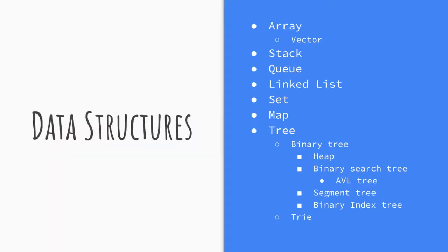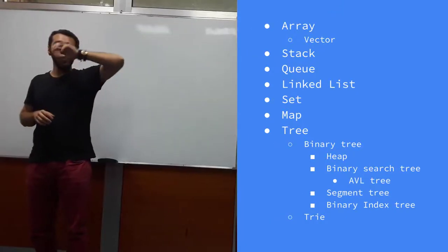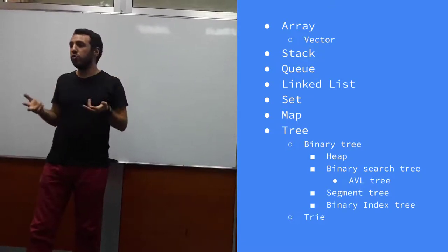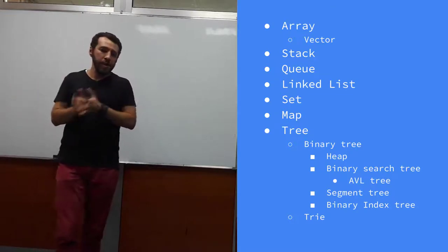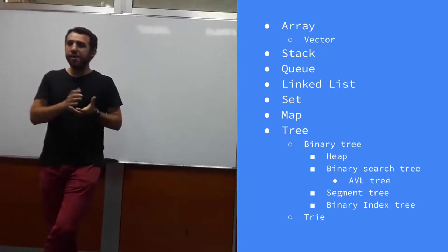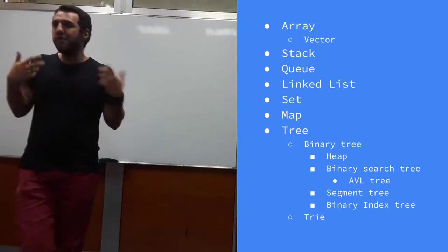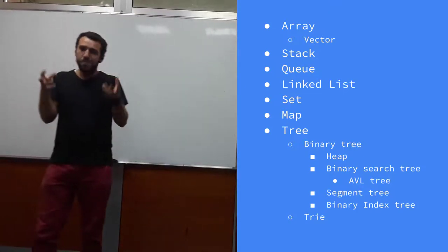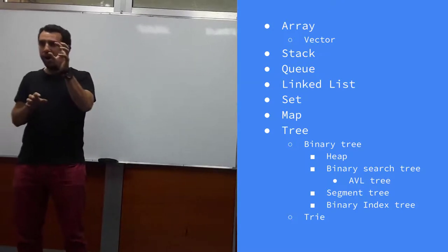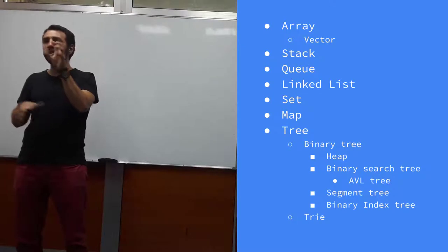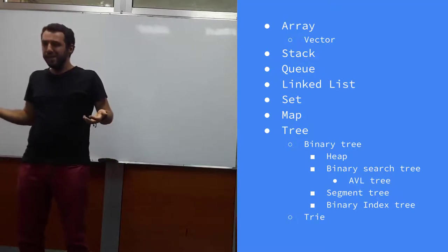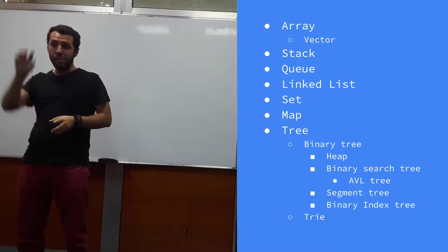Binary trees are ones in which we have up to two children at each node — a node can have zero, one, or two children, not three. Heaps are a type of binary tree. In a min-heap, every node contains a value smaller than its children's values, so for all nodes in the tree, the minimum element will always appear at the root. We also have binary search trees, which are very handy for searching.